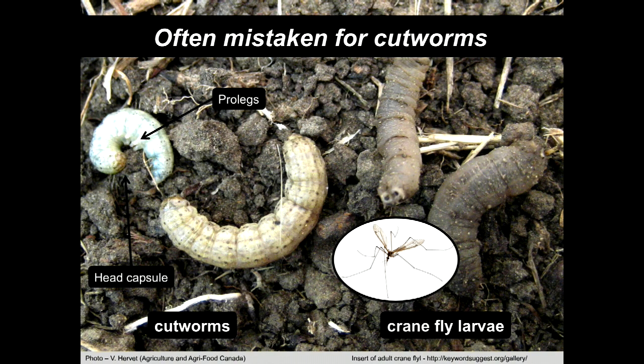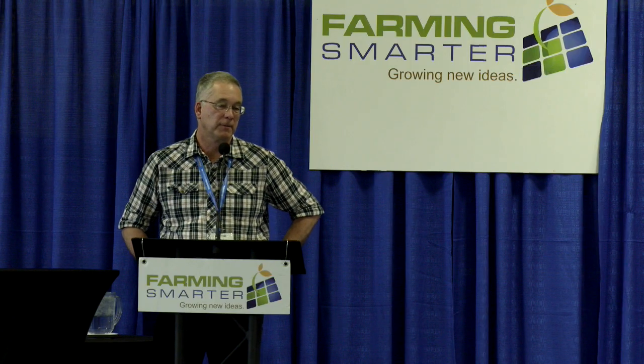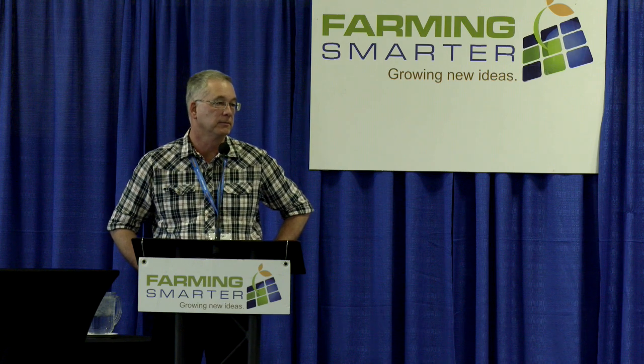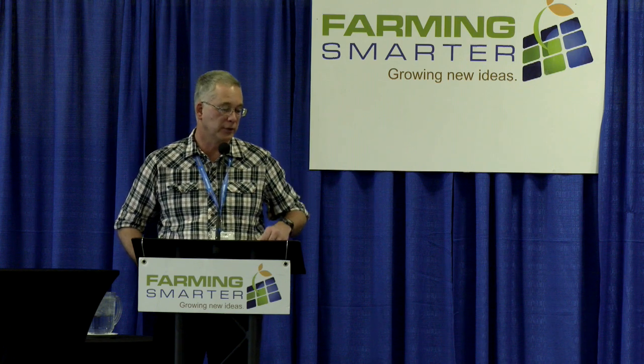A tricky one even for some experts: cutworms versus fly maggots. In terms of color, size, and shape they look very similar. On cutworms you can pick out the head capsule and prolegs under the abdomen. Fly maggots have no head capsule and no legs. These maggots become crane flies — which look like giant mosquitoes — and their larvae can reach high numbers in turf grasses and cause damage, though they're usually not a pest on the prairies.